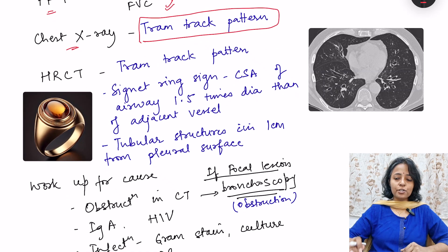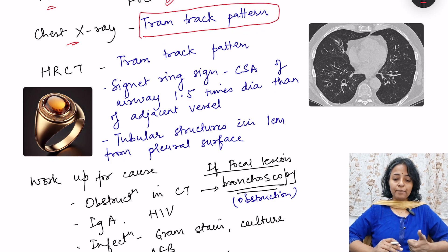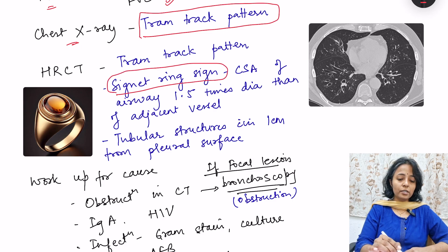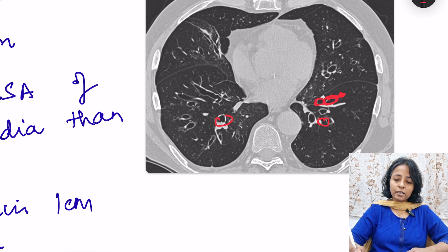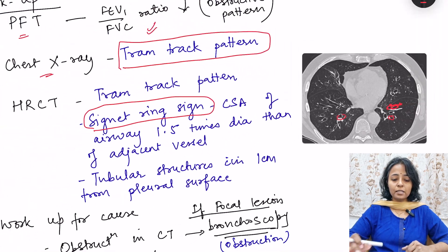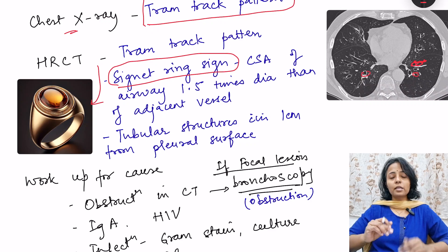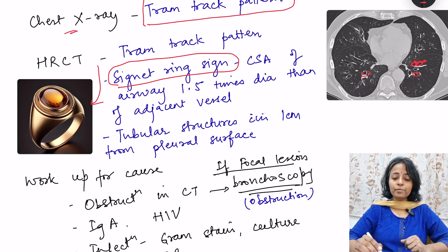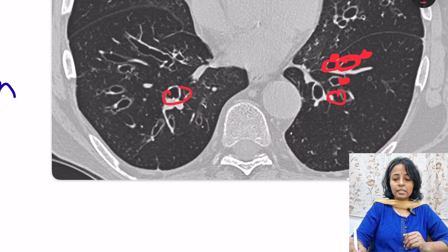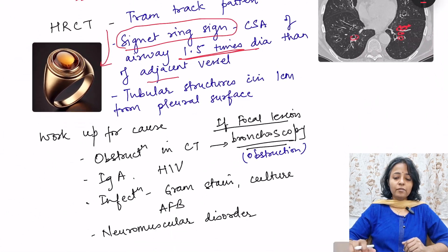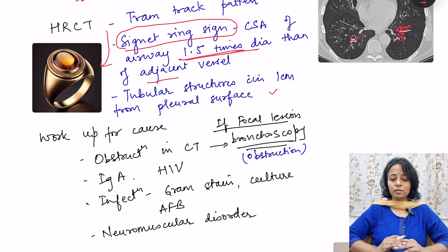The most specific investigation is high-resolution CT (HRCT), where we will see the tram-track pattern and the signet ring sign. The signet ring sign is seen because of dilation of the airways — the cross-sectional area of the airway becomes 1.5 times the diameter of the adjacent vessel. The small dot in the signet ring is the adjacent vessel, and nearby we see the dilated airway. We also see tubular structures within 1 cm from the pleural surface.